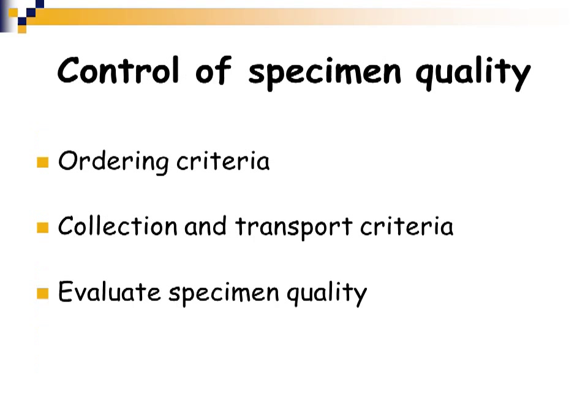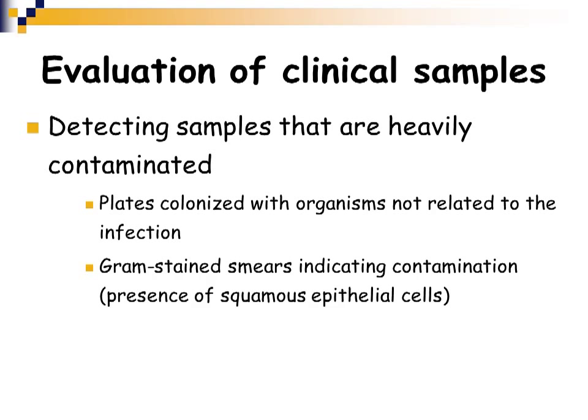We want to control specimen quality — the ordering criteria, how specimens are collected, how they are transported from the collection site to the laboratory, and evaluation of the quality of the specimen delivered. In the clinical lab, we always evaluate the samples. If a specimen comes in heavily contaminated, or if a plate that is opened is not sterile, you would want to discard it and report repeated contamination to the company.